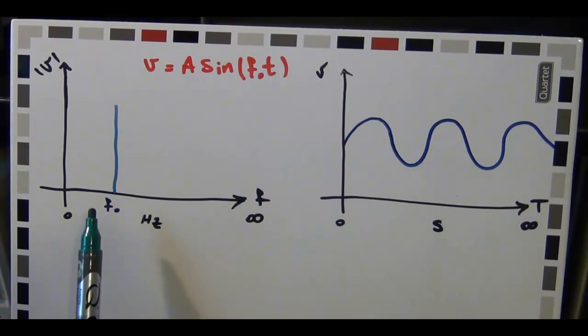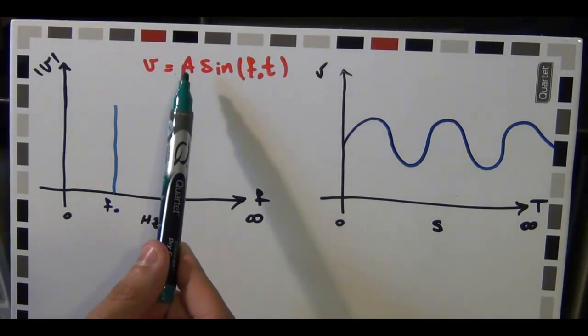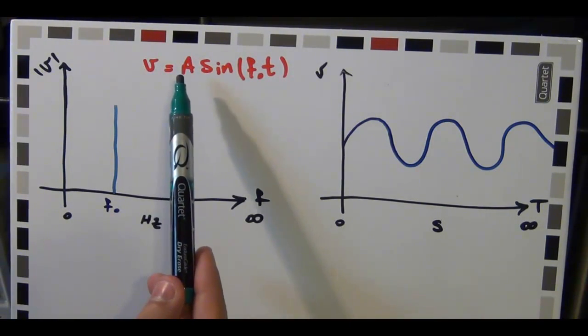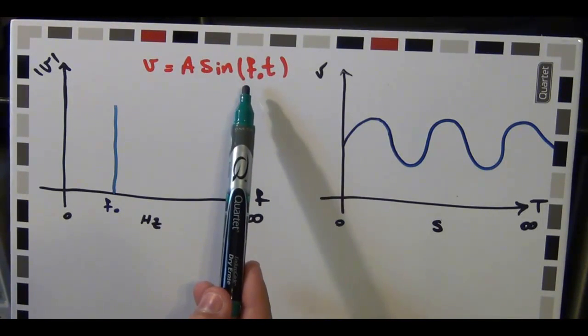And if I were to plot that in the frequency domain, the spectrum of that signal will just have energy in only one frequency, frequency F0. Of course, this is the ideal case. Just the thermal limits, the thermal noise of the universe is sufficient to make this impossible. And there are many other challenges why making something like this is impossible. But so what are some of the imperfections that come into play? Well, the amplitude here is constant. In reality, it can be and it will be a function of time.